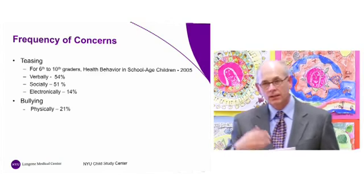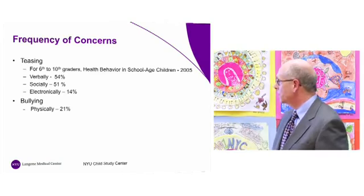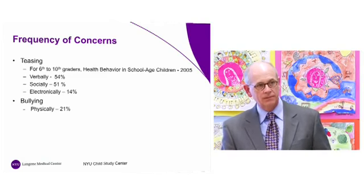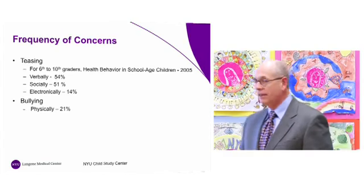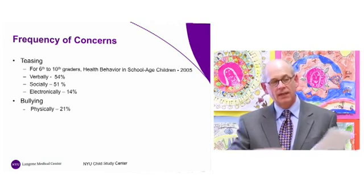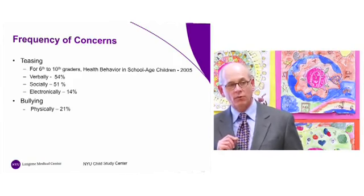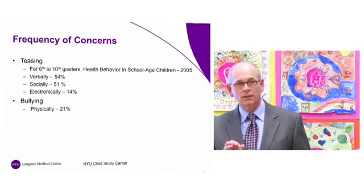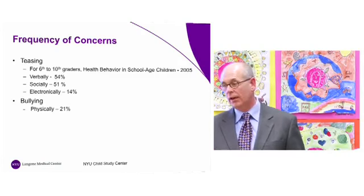When kids report on teasing, 54% said that in the last time period before the survey they were objects of teasing — so it's a majority of kids. 51% said they've been socially teased, meaning they were criticized and not allowed to be involved in a certain social group. Electronically — and this is 2005, so it's probably more prominent now — 14% of kids reported it. Facebook, Twitter, and text messaging were not highly prominent in 2005, so these numbers are probably occurring at a higher level today.